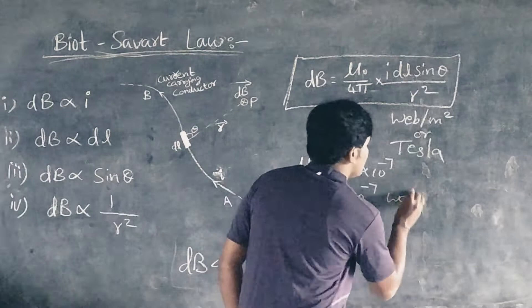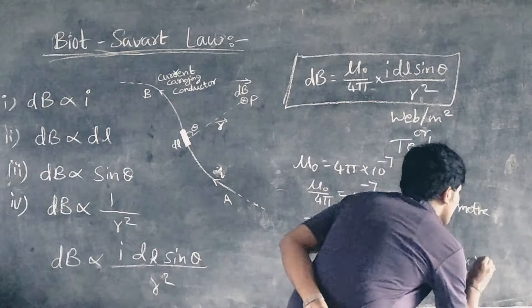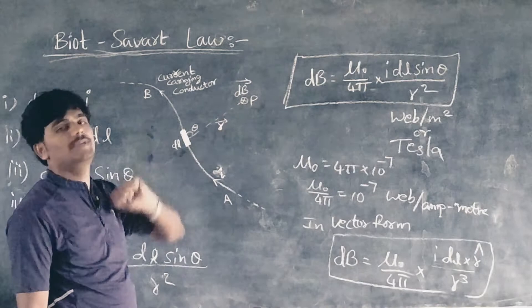In vector form we can write dB equals mu naught by 4 pi I dl cross r cap by r cubed, where r cap is the unit vector in the direction of the line joining from the current element dl to point P. This is also known as the position vector.